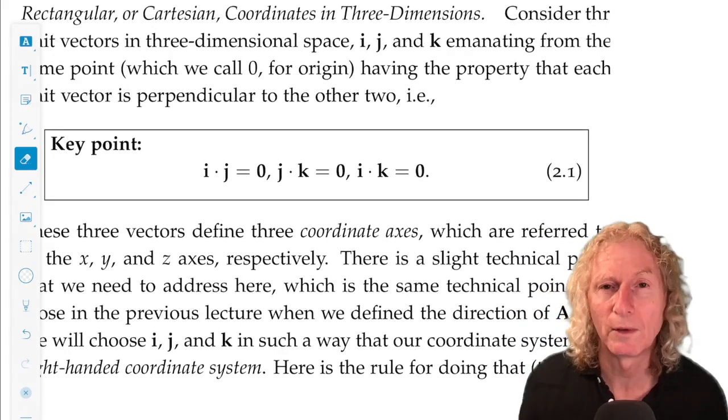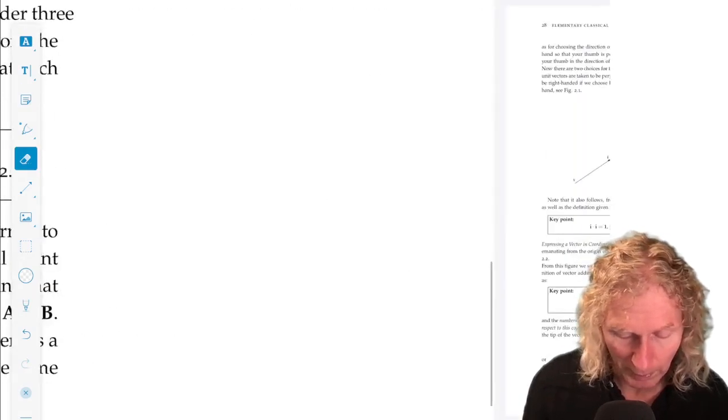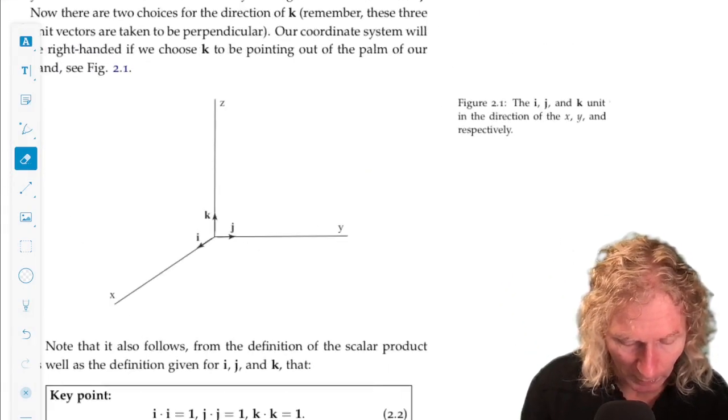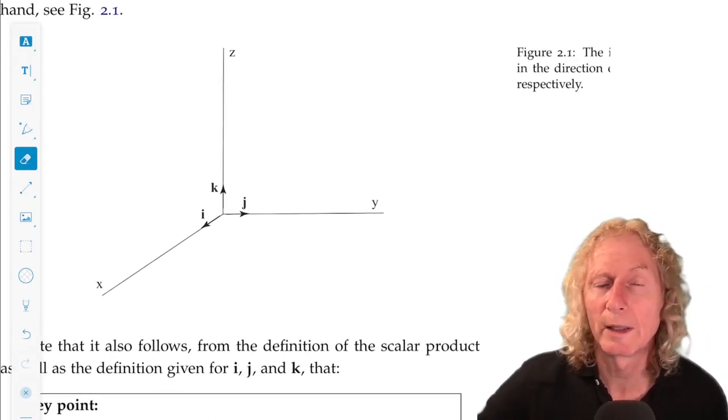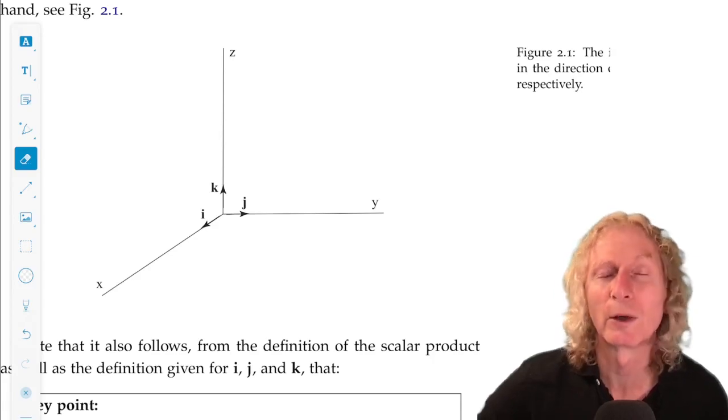Now we want this coordinate system to be a right-handed coordinate system, and the reasons for that are not clear yet, but just trust me on that. So we use the same right-hand rule that we did when we defined the cross product.